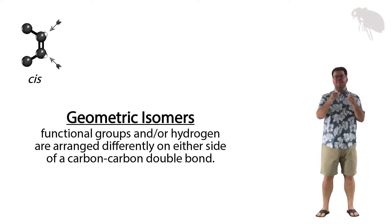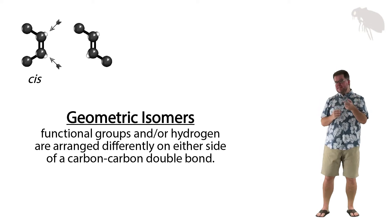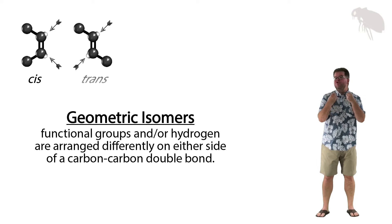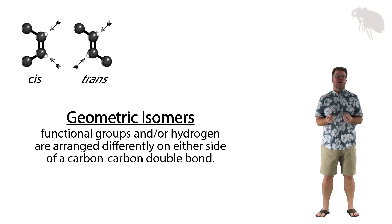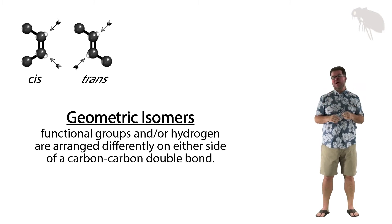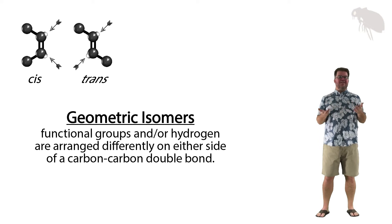By contrast, we get an isomer from this when the hydrogens are on opposite sides of the double bond, as we can now see. That is what's called a trans geometric isomer, where the hydrogens are trans, opposite, or across from each other, rather than cis on the same side of the double bond. Now if you're looking at this going 'why does this matter?', remember that this is a planar structure.